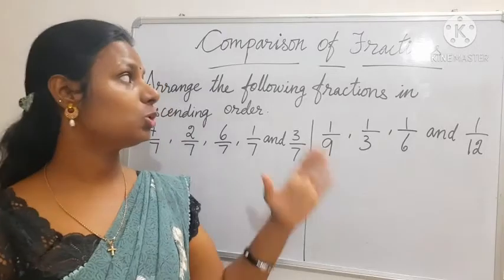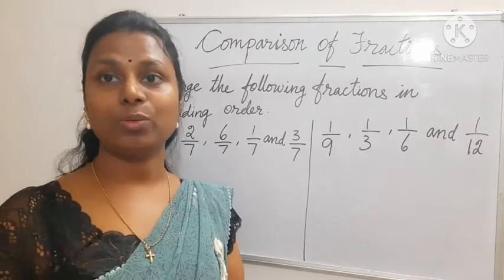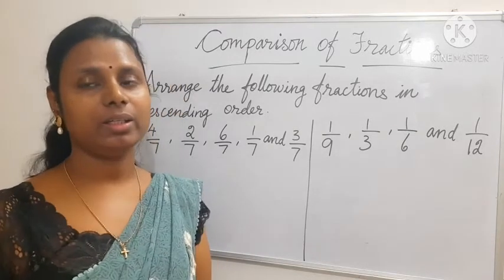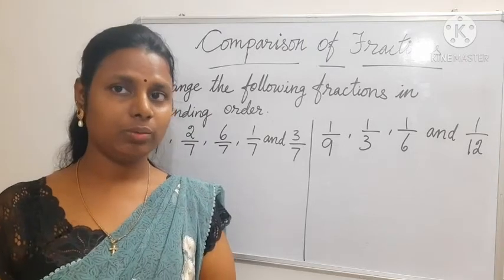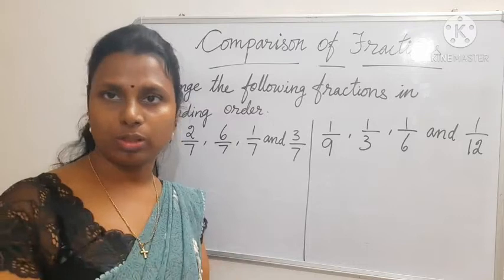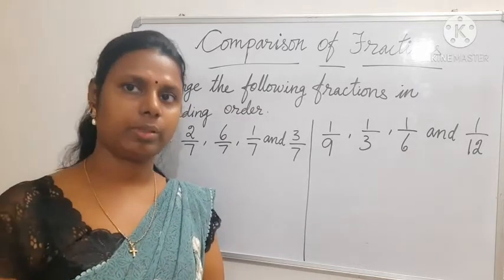Hi students, we are going to do descending order. In the last video we did ascending order. Descending order means greatest to smallest, greatest to smallest - bada number se chota number.